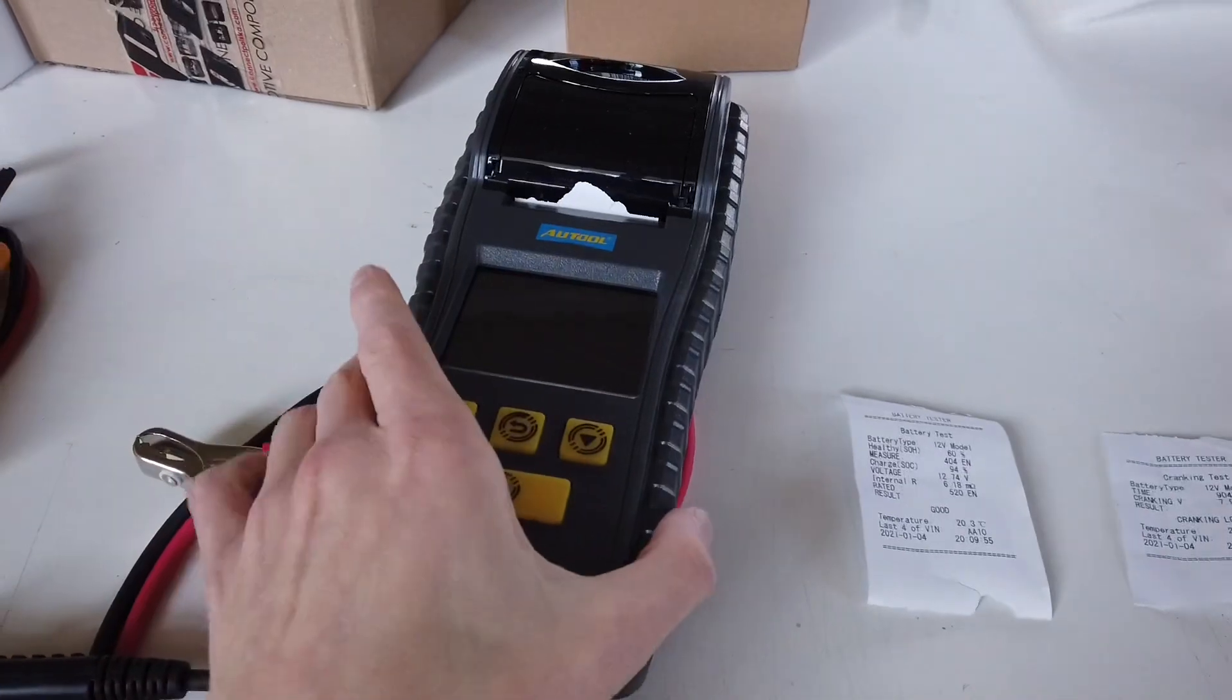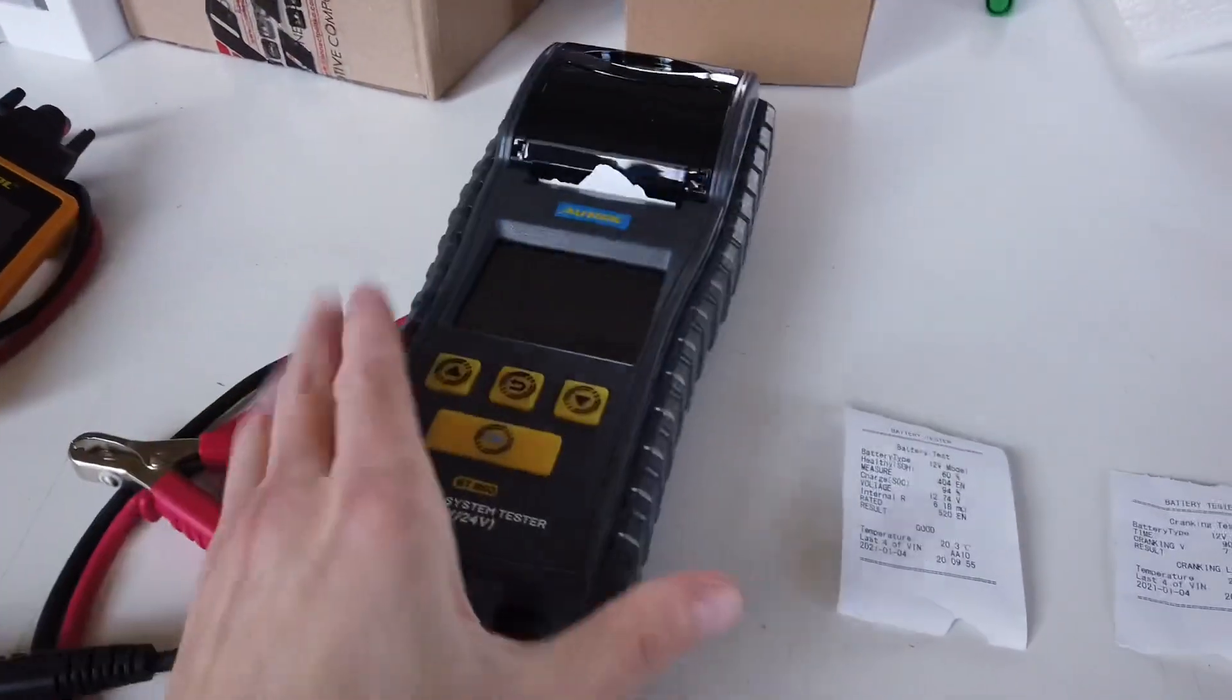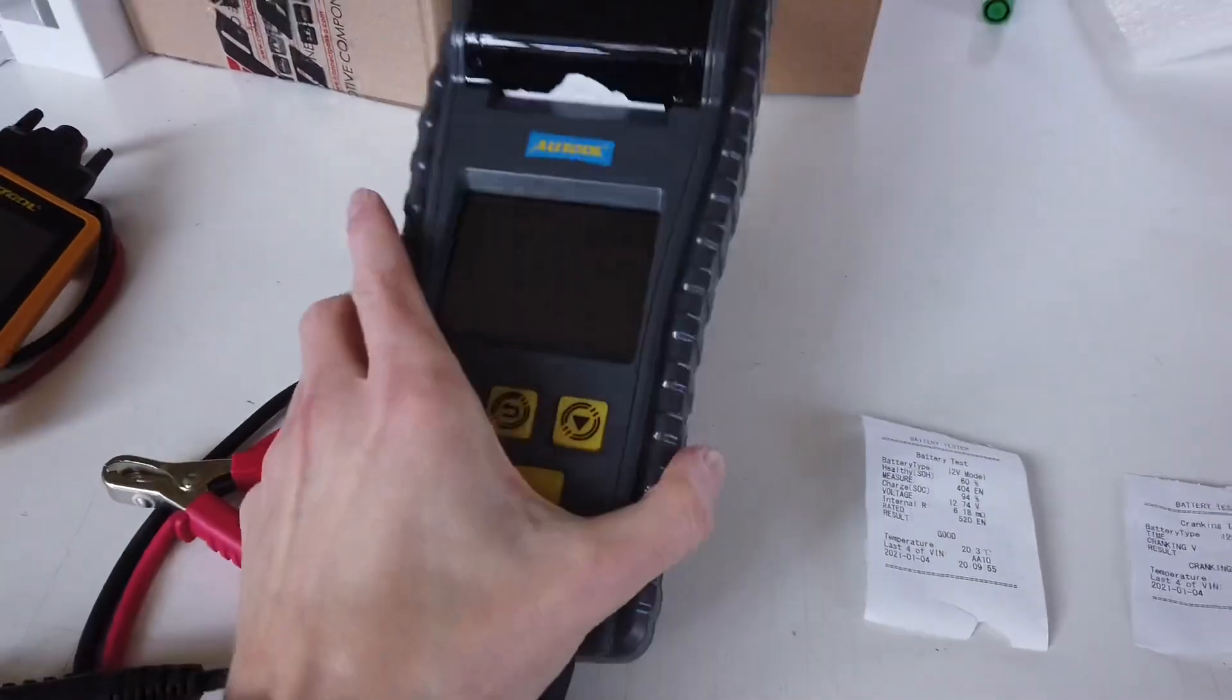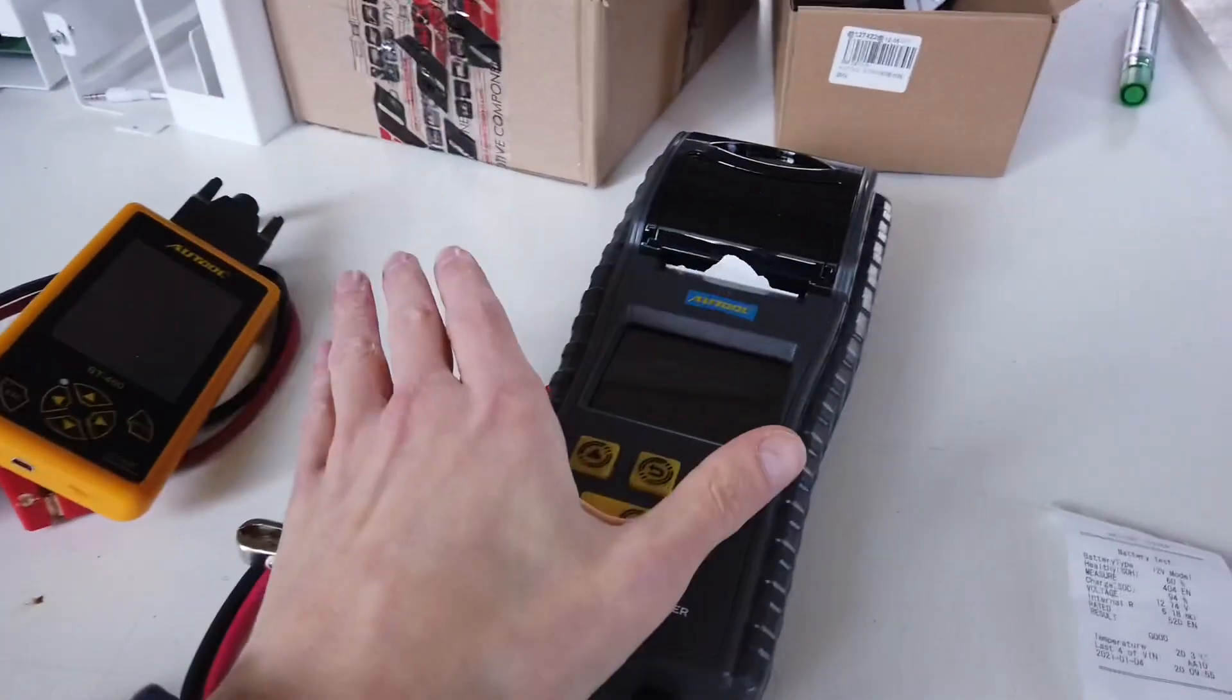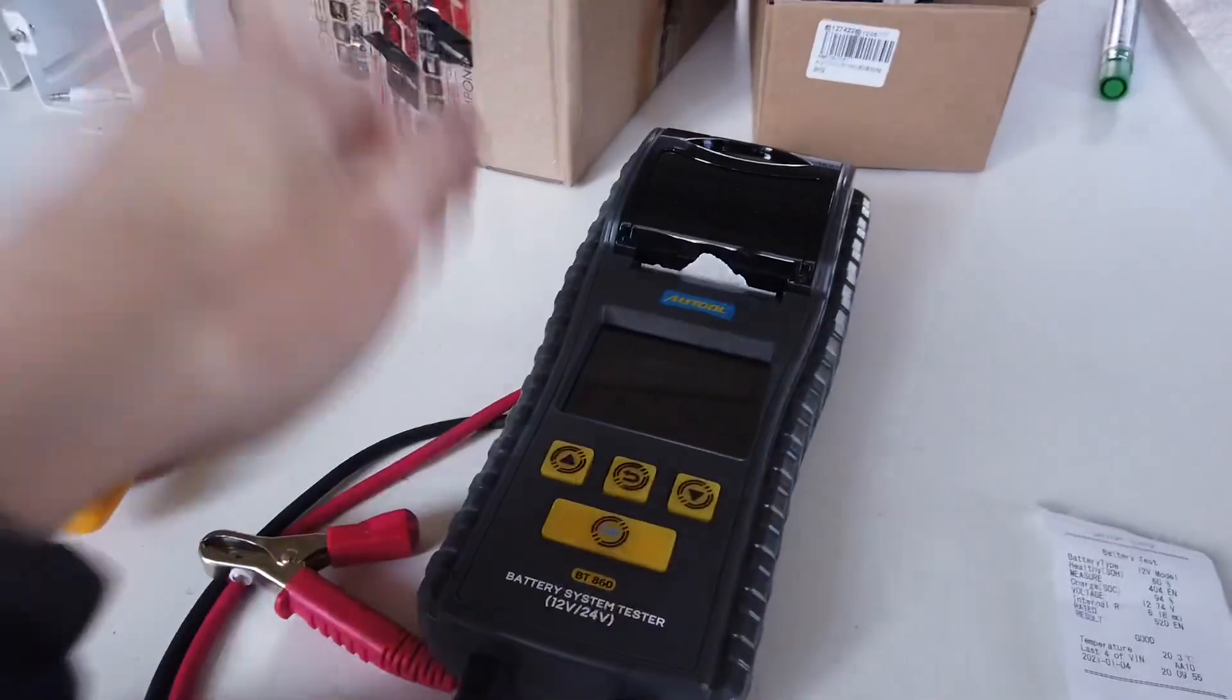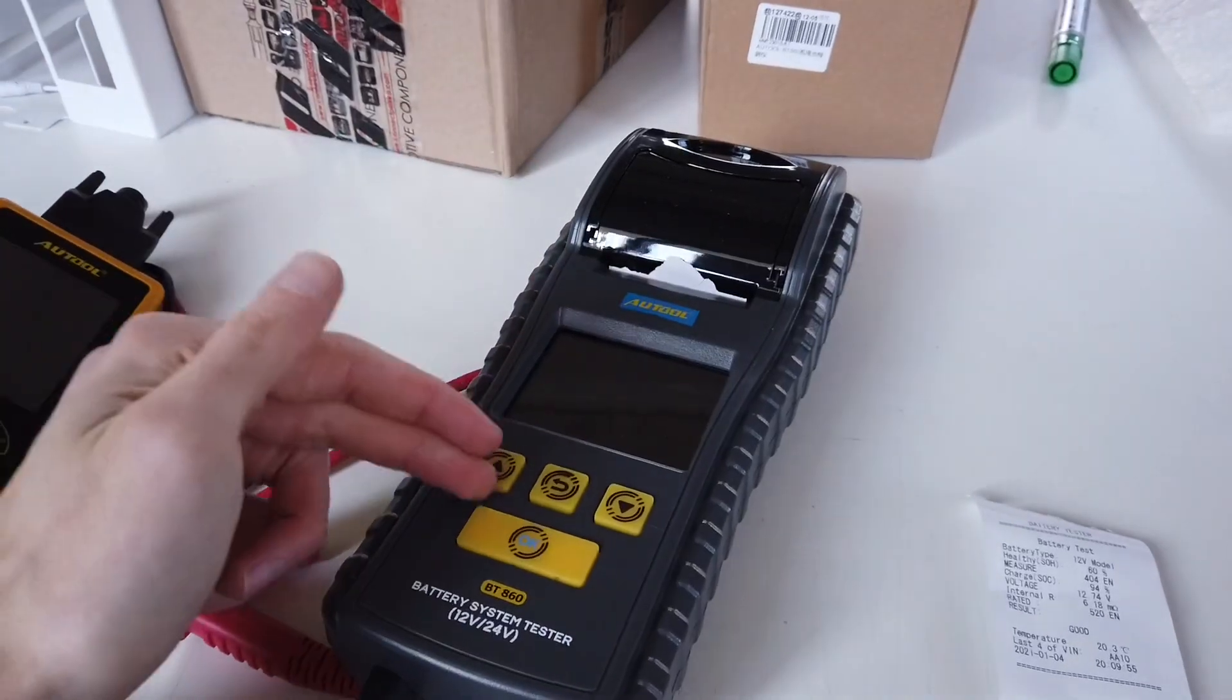So overall, it's a very nice upgrade from the previous device. It's much bigger, but still it's very easy to use. It's not too big to fit in your engine compartment, and it's even better to have it in this size because it will not drop down. And of course, you have the printer, you have those nicer buttons, and you have those printouts.